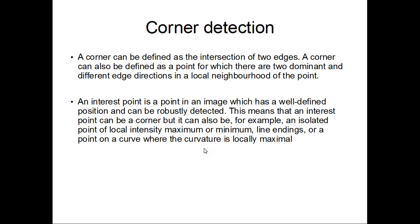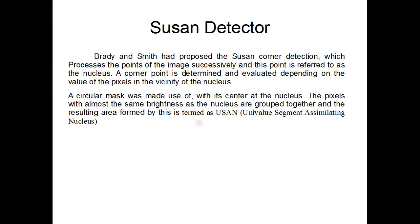The corner, which can be defined as the intersection of two edges, is the two dominant and different edge directions in the local neighborhood of the point. An interest point is a point in an image which has a well-defined position and can be robustly detected. This means that an interest point can be a corner but it can also be, for example, an isolated point of local intensity maximum or minimum. Line endings are a point on a curve where the curvature is locally maximum.